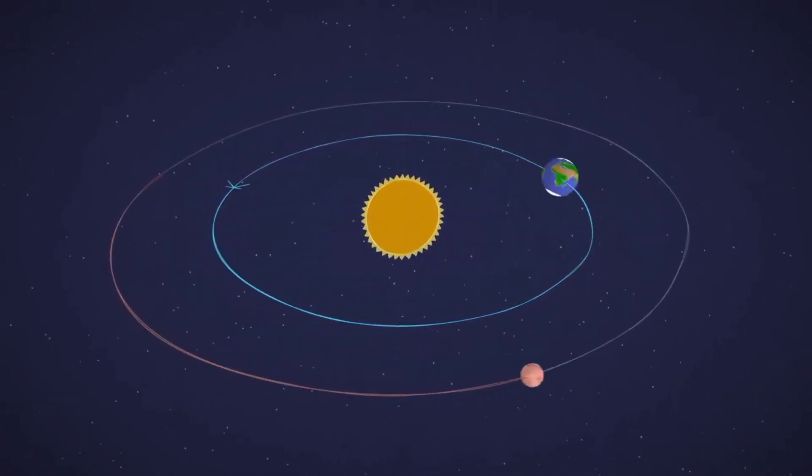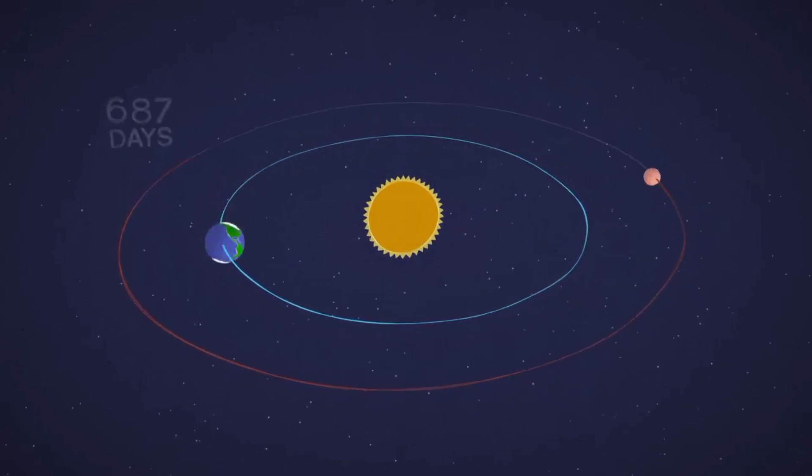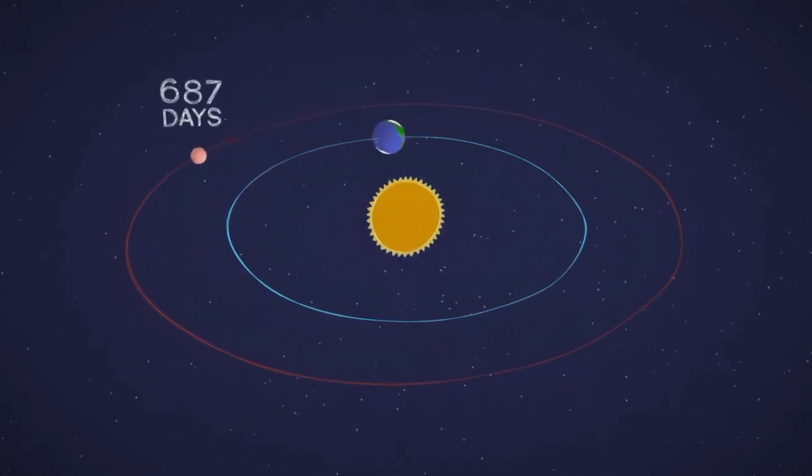Mars is a little slower and farther from the Sun, so a full circuit takes 687 Earth days, or one Mars year.